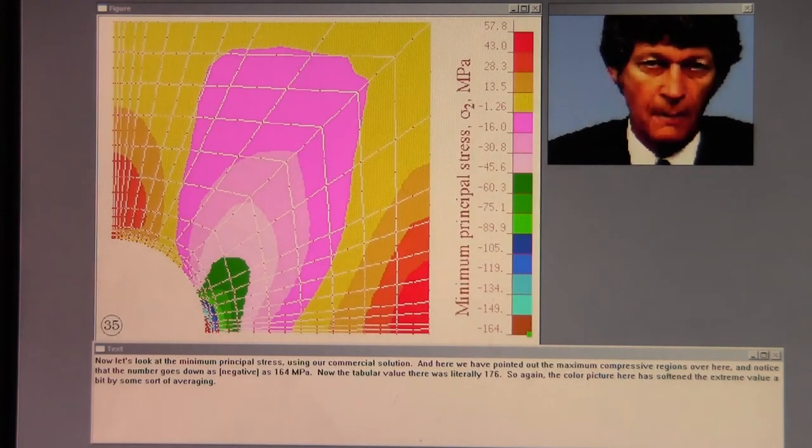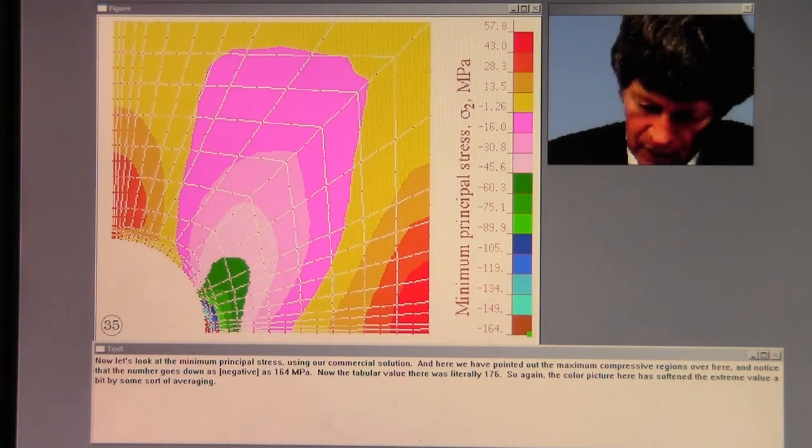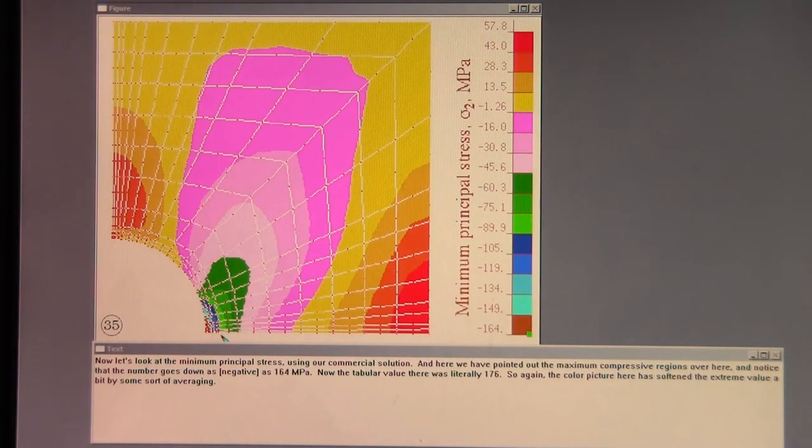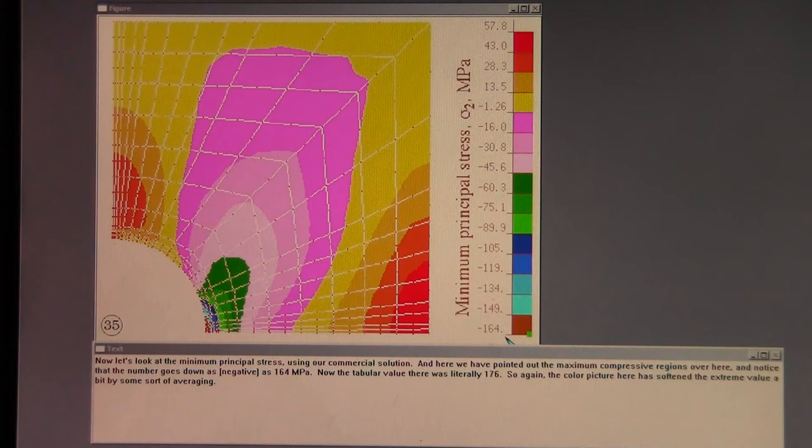Now let's look at the minimum principal stress using our commercial solution. And here we have pointed out the maximum compressive regions over here. And notice that the number goes down as minus as 164 megapascals. Now the tabular value there was literally 176. So again the color picture here has softened the extreme value a bit by some sort of averaging.